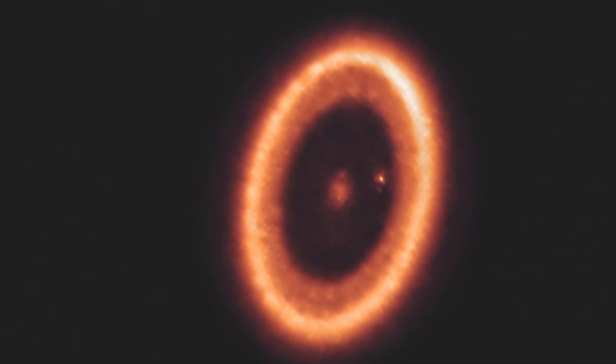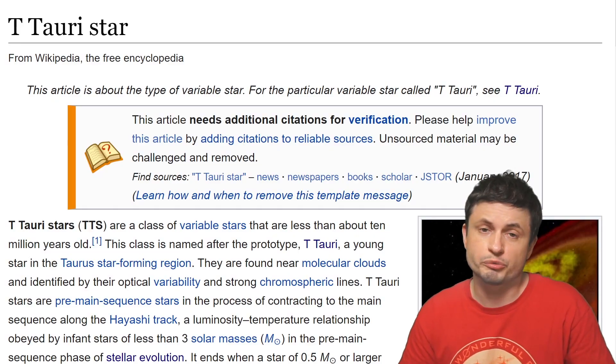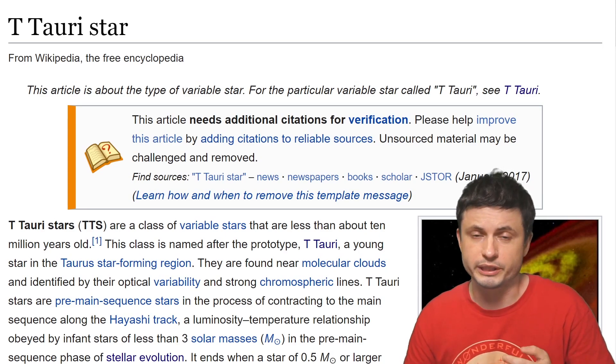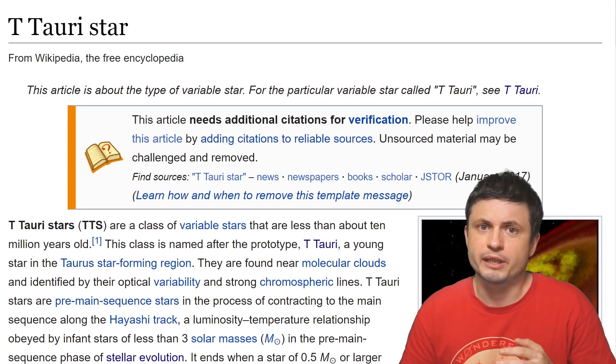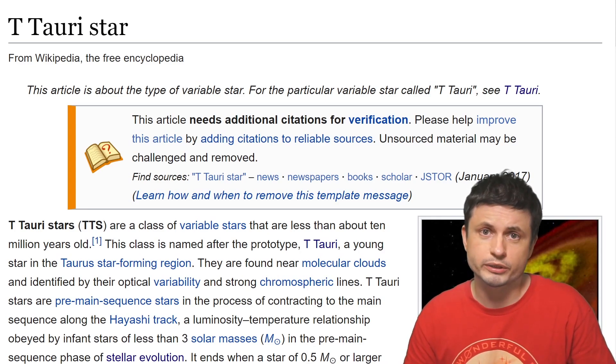This type of object is known as a T-Tauri star, an object that's going to become an actual star in a few million years but is not one yet. It's still developing, something our Sun went through approximately 4.5 billion years ago. Generally speaking, T-Tauri stars are extremely active. They produce a lot of magnetic effects and use these powerful magnetic fields to guide and control matter in the protoplanetary disk and to acquire size and grow.